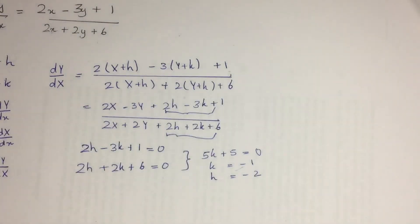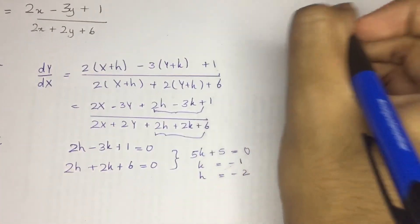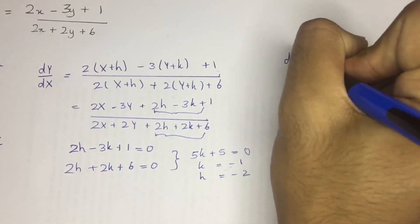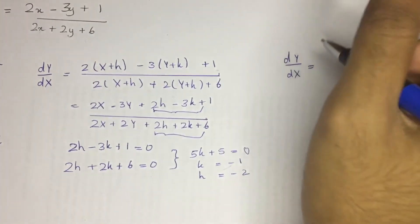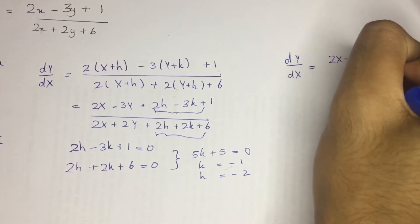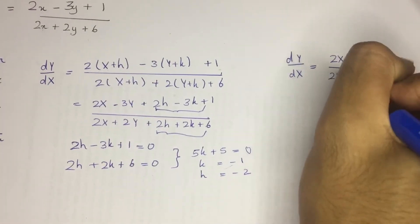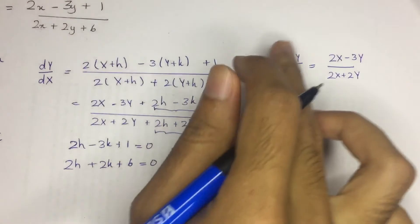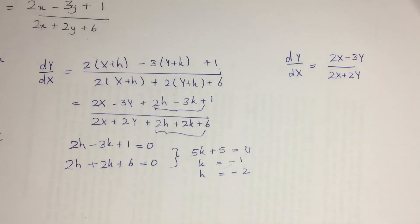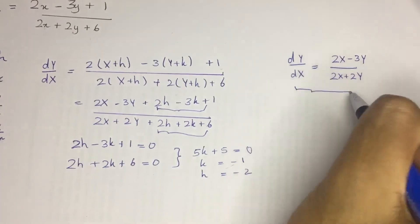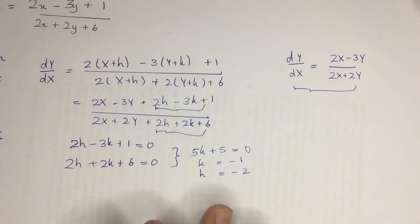After substituting those H and K values, we get the homogeneous equation: dY by dX equals 2X minus 3Y divided by 2X plus 2Y. You don't necessarily need to verify it's homogeneous again, but you can substitute Y equals lambda X to confirm. After that, we use the methods already established for homogeneous type questions.